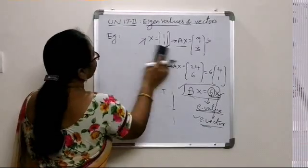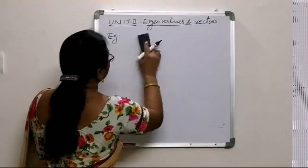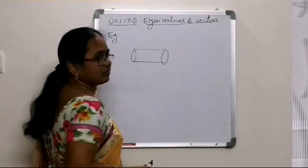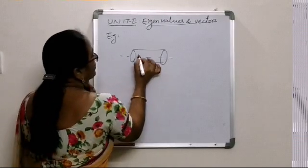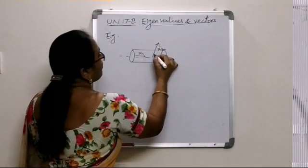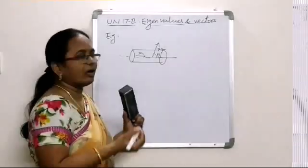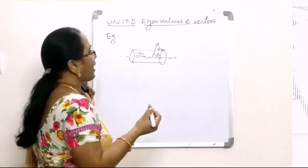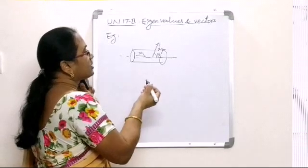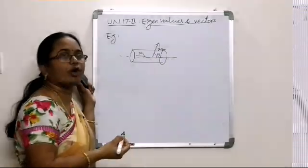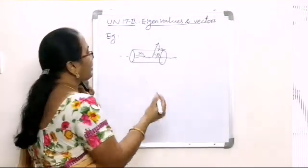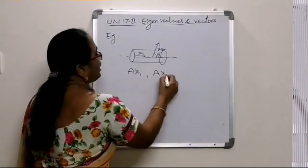Let us move on to the real-time application. Let me draw a cylindrical object. Suppose this is the axis of the cylinder, and there is a vector x1 parallel to the axis. Also suppose another vector x2 at an angle theta with the axis. We suppose the force applied over this cylindrical object is represented by a square matrix A, and let us see what happens to the products A·x1 and A·x2.